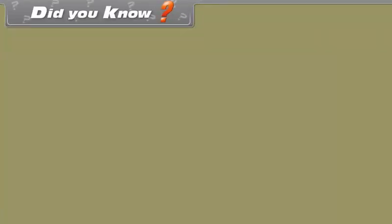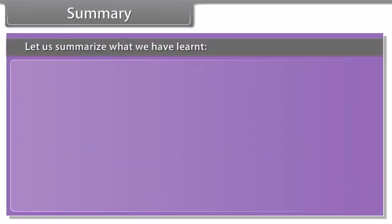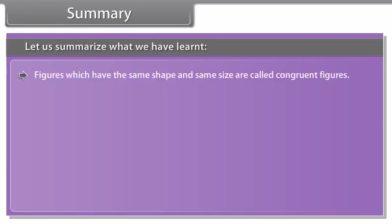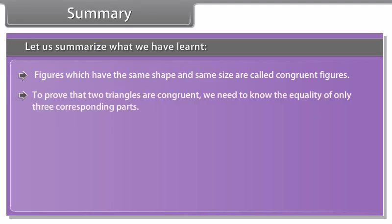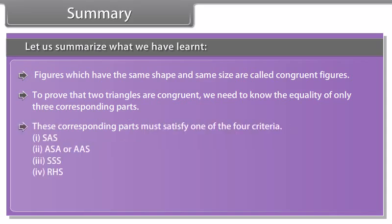Did you know? We all must have seen the ice tray in your refrigerator. Observe that the moulds for making ice are all congruent. The cast used for moulding in the tray also has congruent depressions — maybe all are rectangular, or all circular, or all triangular. So whenever identical objects have to be produced, the concept of congruence is used in making the cast.